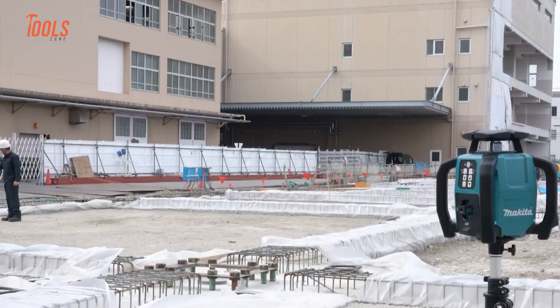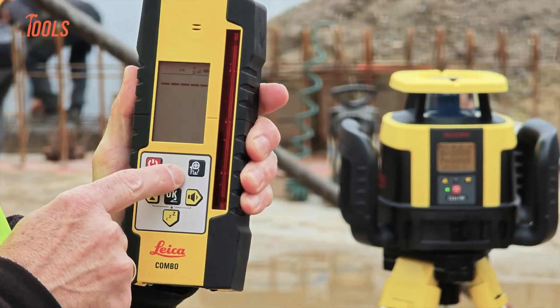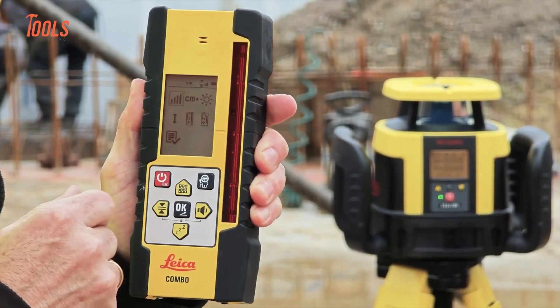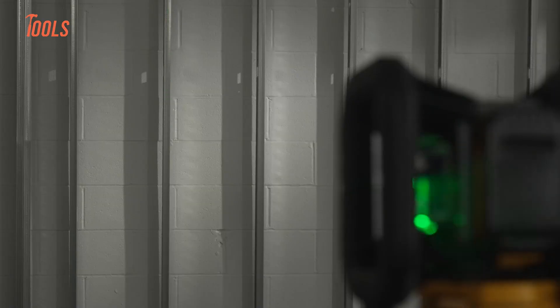A receiver allows you to detect the laser line even when it's invisible to the naked eye under bright sunlight. This is especially useful for outdoor leveling, surveying, or large-scale construction. So the ability to connect to receivers and maintain accuracy over long distances is another reason why the professional models come at a premium.